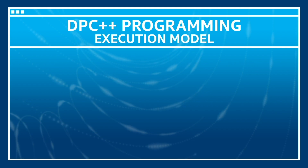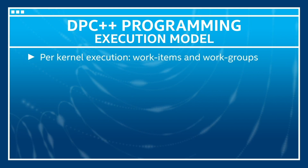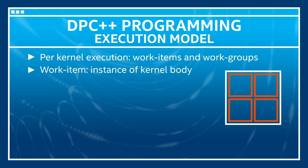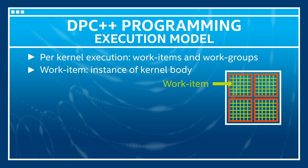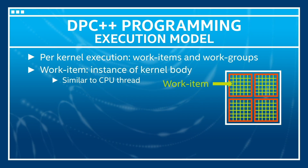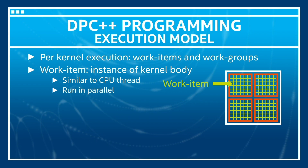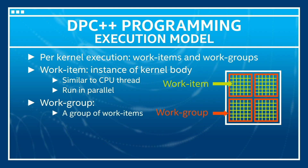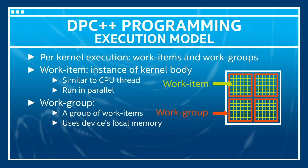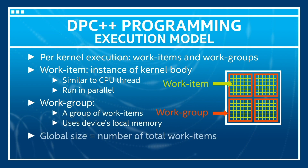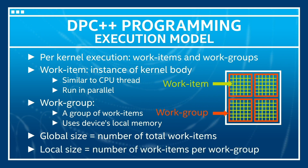Then there is the execution model. Each kernel execution results in work items and work groups. A work item is an instance of the kernel body and is similar to a CPU thread. Multiple work items run the same kernel body code in parallel. A work group is a group of work items and each work group uses the device's local memory. The global size is the number of total work items and the local size is the number of work items per work group.